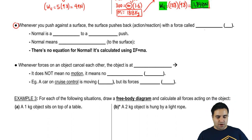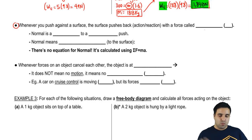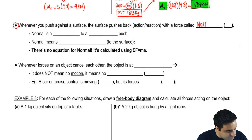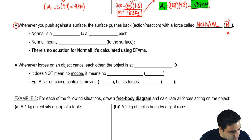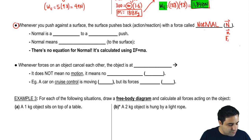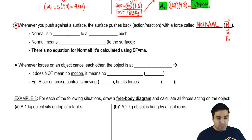Whenever you push against a surface, the surface pushes back — this is because of Newton's third law of action-reaction. You push on something and it pushes back with the same magnitude but opposite direction. When you do this to a surface, the force that the surface pushes back with is called normal, represented by big N. Some books use little n so it's not confused with the Newton unit, or write it as the force of normal.